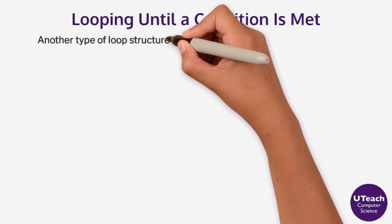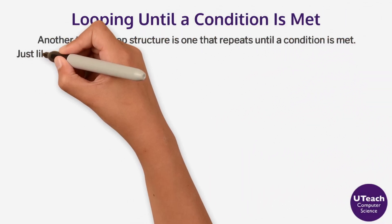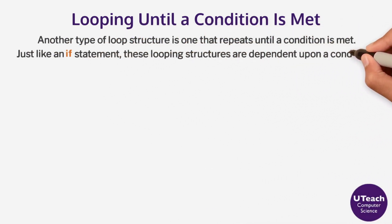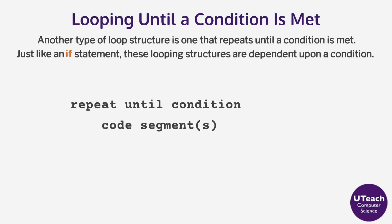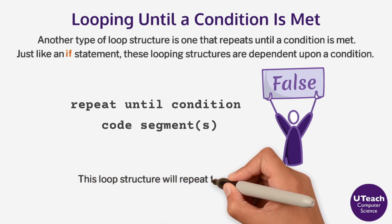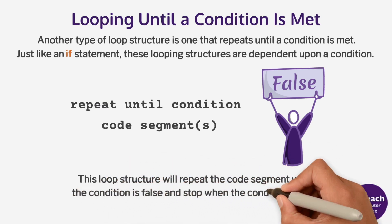Another type of loop structure is one that repeats until a condition is met. Just like an if statement, these looping structures are dependent upon a condition. Both Scratch and the AP CSP pseudocode have a repeat until loop. This loop structure will repeat the code segment when the condition is false and stop when the condition is true.